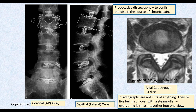Then we talked about this — ignore the stuff in the middle right now. This is a radiograph: this is a sagittal view, this is a coronal view. Does anybody know what this test is? This is called provocated discography. This is a patient beyond chiropractic care, beyond physical therapy, beyond medication. They have so much pain they can't work. They're going to lose their house. A rip within the disc can cause horrible pain, to the point where you need to basically get rid of the disc.